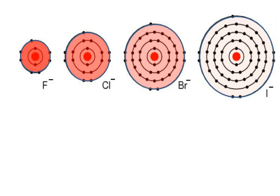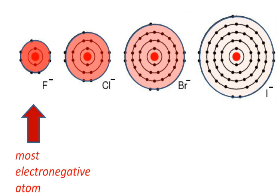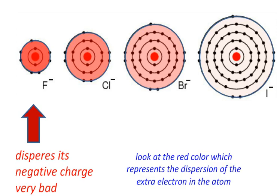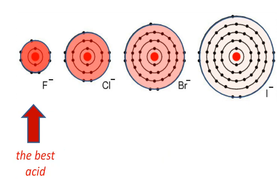So fluorine ion, which is the most electronegative atom, is too small to well disperse its negative charge, and its negative charge is too concentrated and wants to react as soon as possible. So it is the best base.